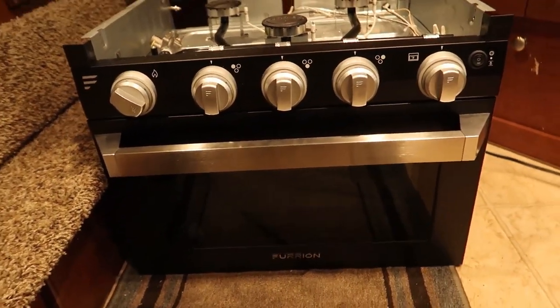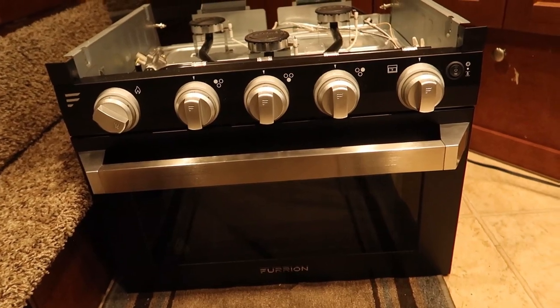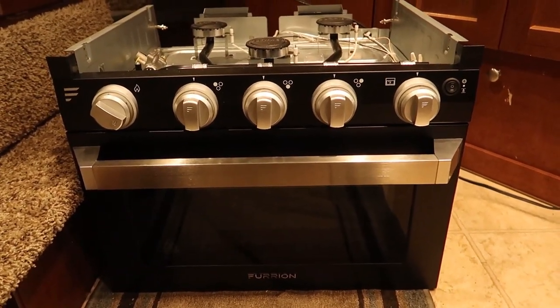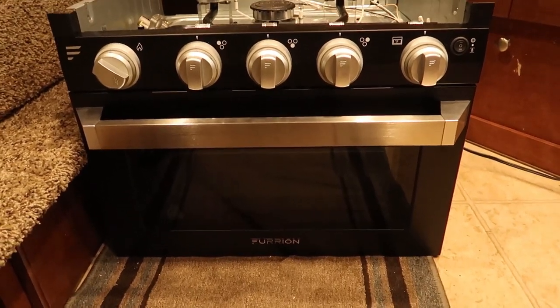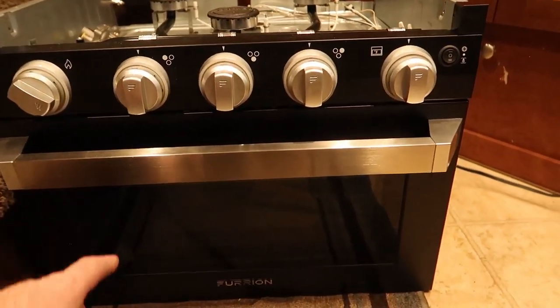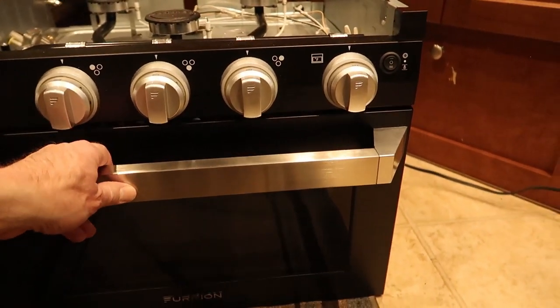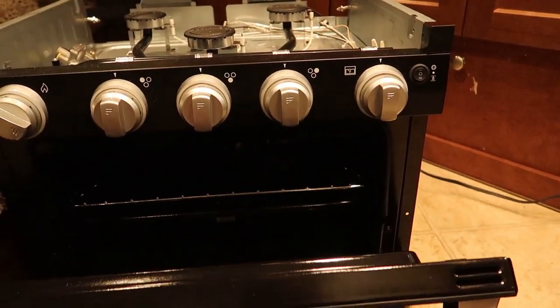And here's my new oven. This is a Furion. This is what Northwood is now using from the RV factory. Although they aren't using the short one, they are using the 21 inch. This is the 17 inch. So the difference is that the oven isn't quite as tall.